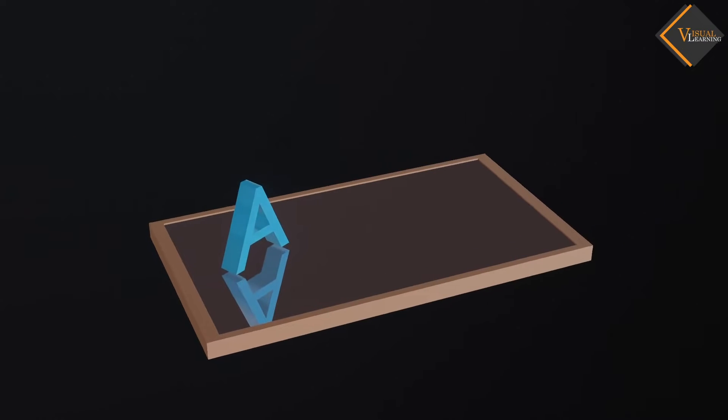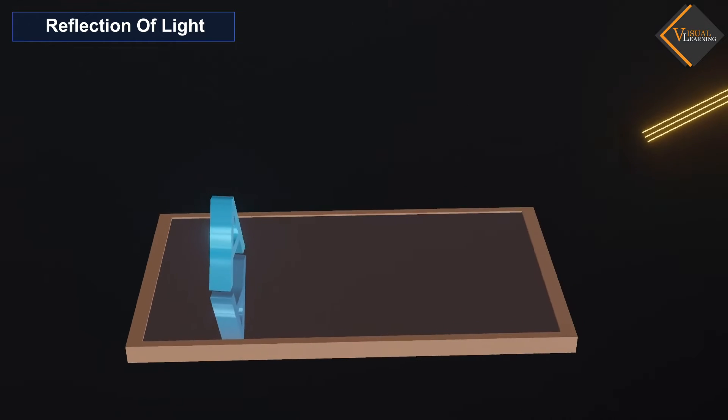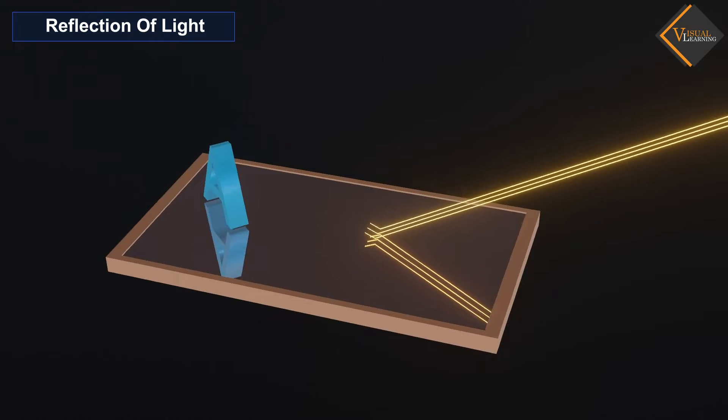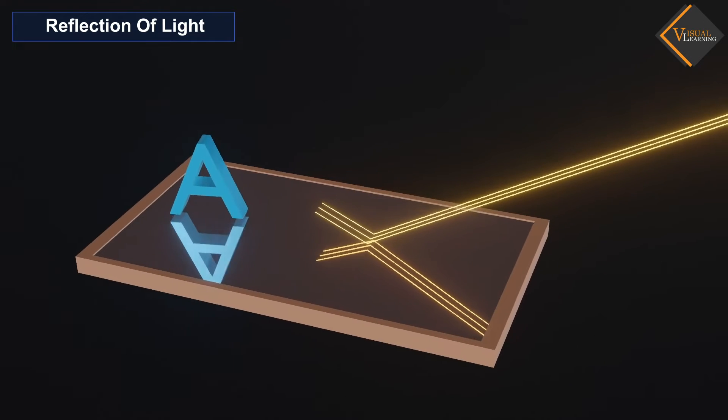In this video, we will understand reflection of light. When a ray of light approaches a smooth polished surface and the light ray bounces back, it is called the reflection of light.